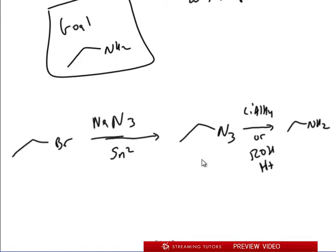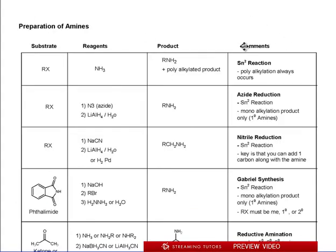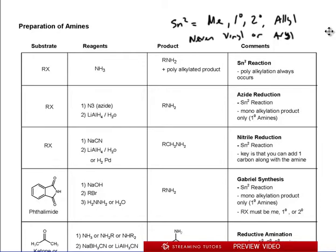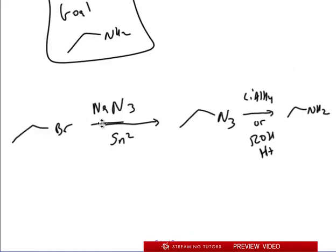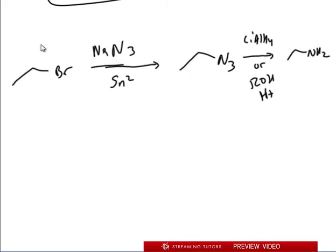The key is that it only happens one time. Since it's SN2, remember the R group must be methyl, primary, secondary, or allylic/benzylic — never vinyl or aryl, meaning never a halogen on a double bond or directly on an aromatic ring. Those are the SN2 constraints. I'm not going to write that definition over and over; it's in the chart I just showed you. Now this overview describes what's happening — the details of the mechanism are what we'll dig into next.